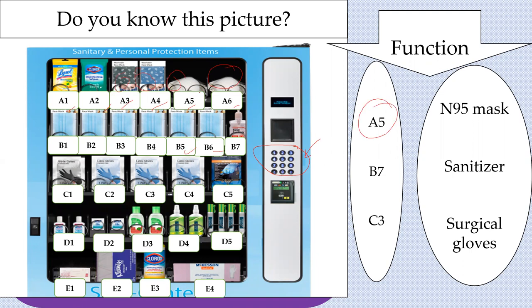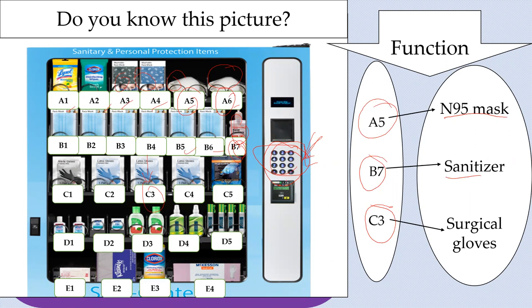For instance, we have A5 — encode it here and you can get an N95 mask. B7 — encode it here and you can get sanitizer. If we have C3, we can get surgical gloves when we encode it. Why is it a function? Because whatever you encode based on the given codes, the particular object will come out of that vending machine. That's the same as a function: if you have an input, you will get a particular output. Whatever code is there, you input it so that your particular desired item comes out.